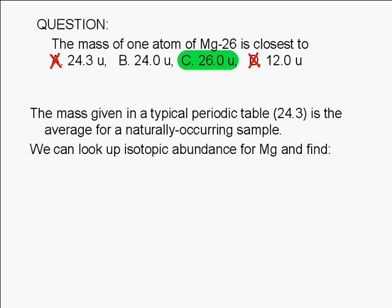We can look up isotopic abundance for magnesium and find the following. Magnesium-24 has a mass of 23.99 atomic mass units and has a relative abundance of 78.99%. This means that about 8 out of 10 magnesium atoms you'll find in nature have a mass of about 24 AMUs.